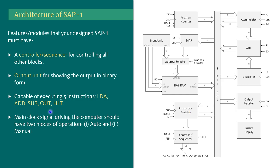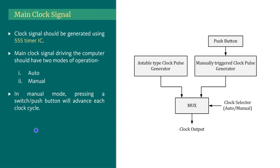Another important thing is the clock signal. For running our computer we will obviously need a clock pulse. Our clock signal should have two modes of operation: one is auto and another is manual.